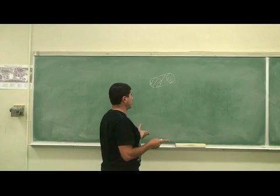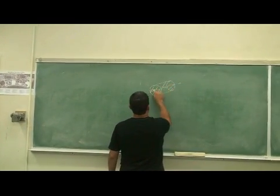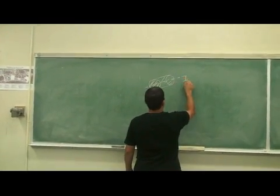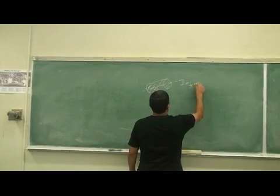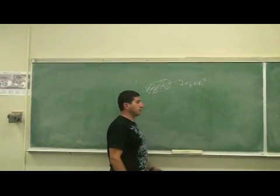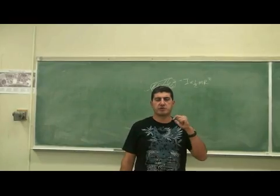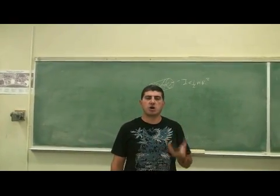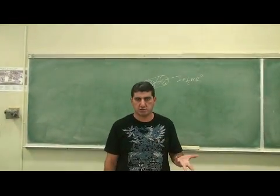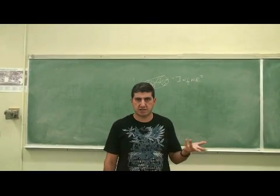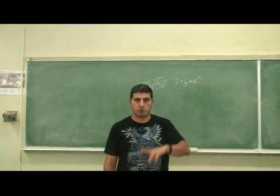In the class we proved that the moment of inertia of a cylinder, solid cylinder, is half m r squared. For basic concept of moment of inertia, think of it as how hard it is to make something rotate. Think of it like mass, but the equivalent of mass for rotation.